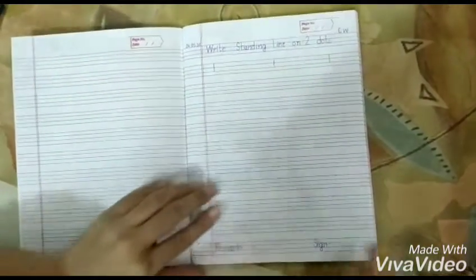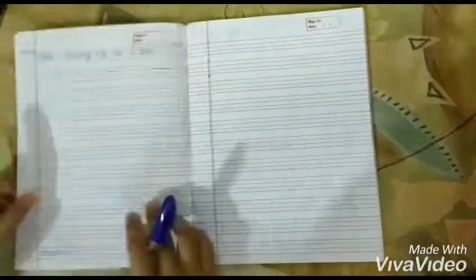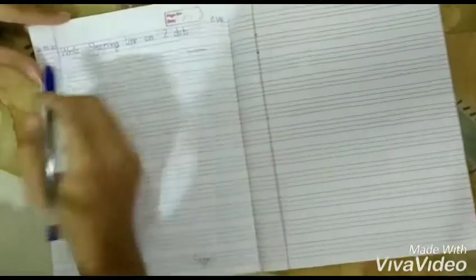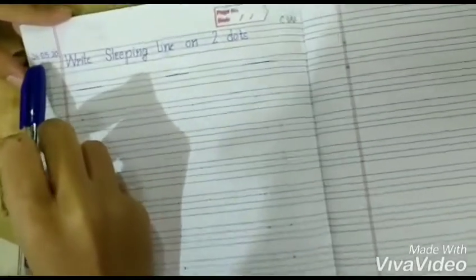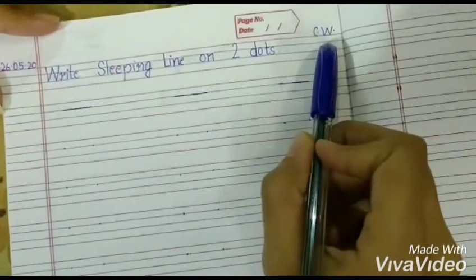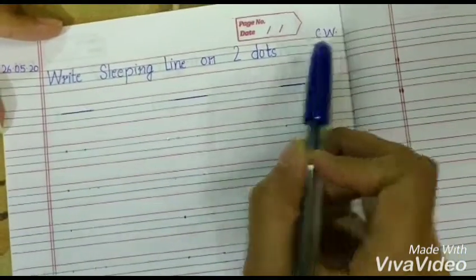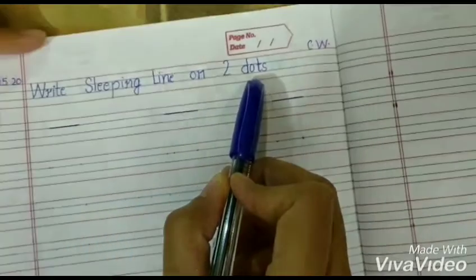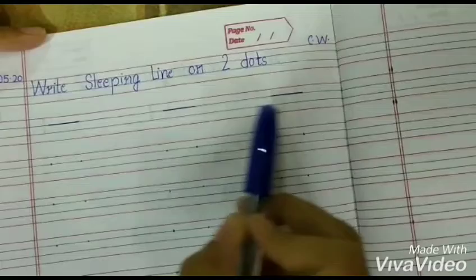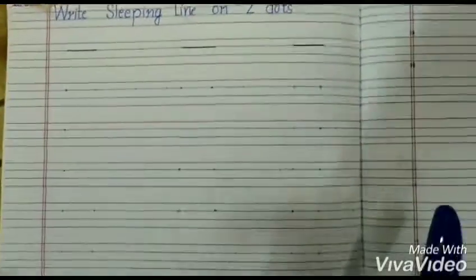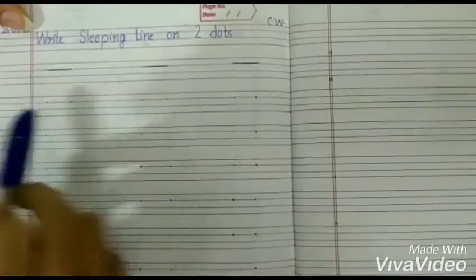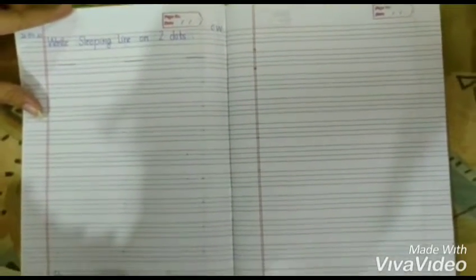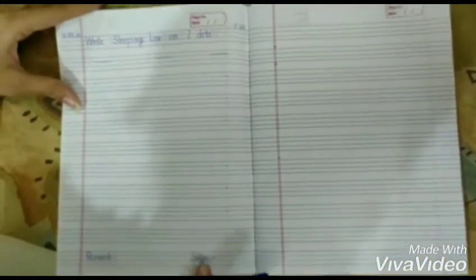Now turn the page and mention a page for the sleeping line. Write today's date here and CW on the right hand side. Write sleeping line on two dots. Make sleeping line and also make three rows of it. Give proper dots on the whole page and at last mention remark on the left hand side and sign on the right hand side.